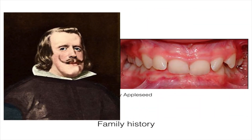Family history is also very important in orthodontics. Certain malocclusions are very commonly inherited, like Class 3, which was very common in the Austrian royal family and was famously known as the Habsburg jaw. Class 2 Division 2 is also very commonly inherited.